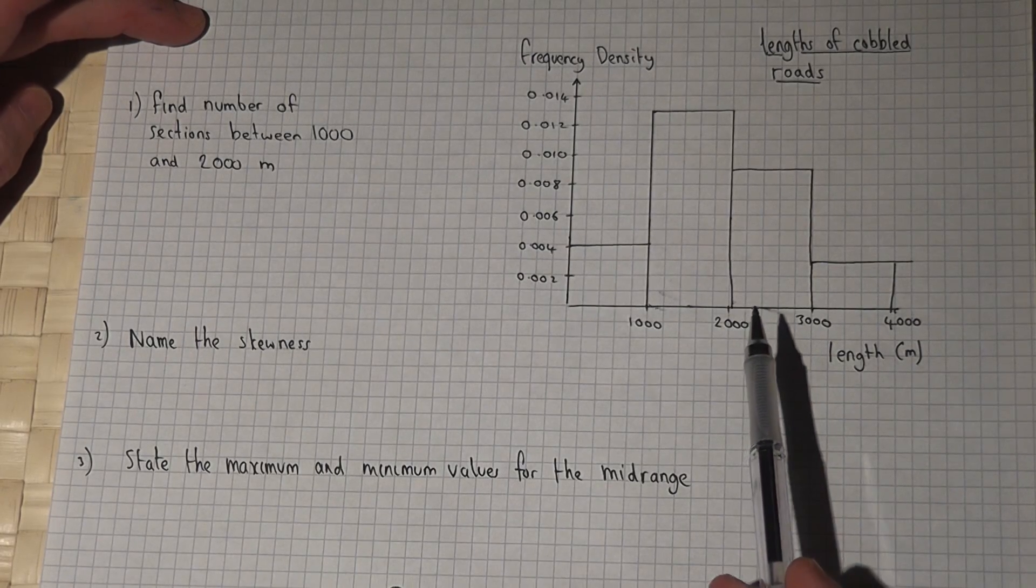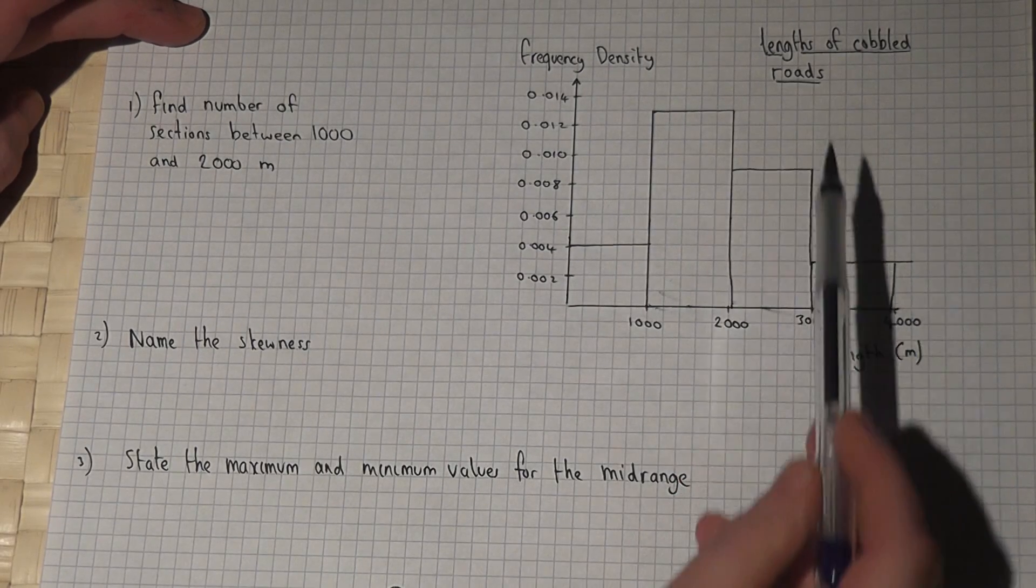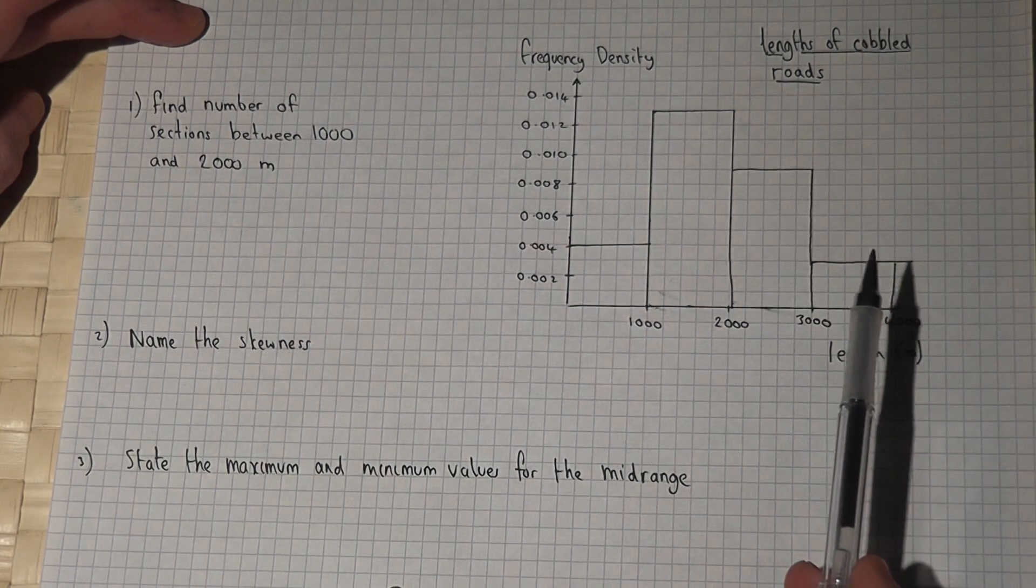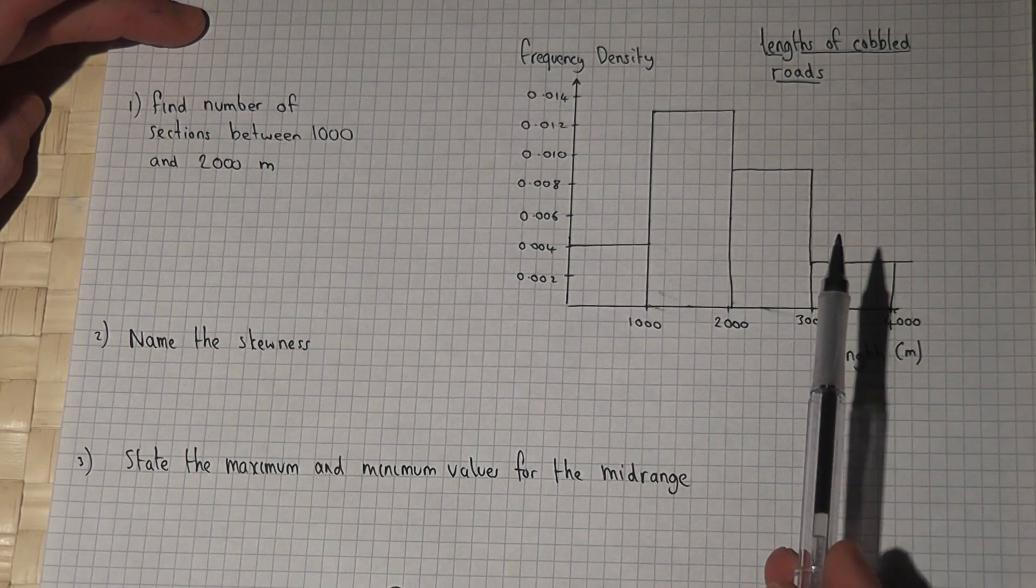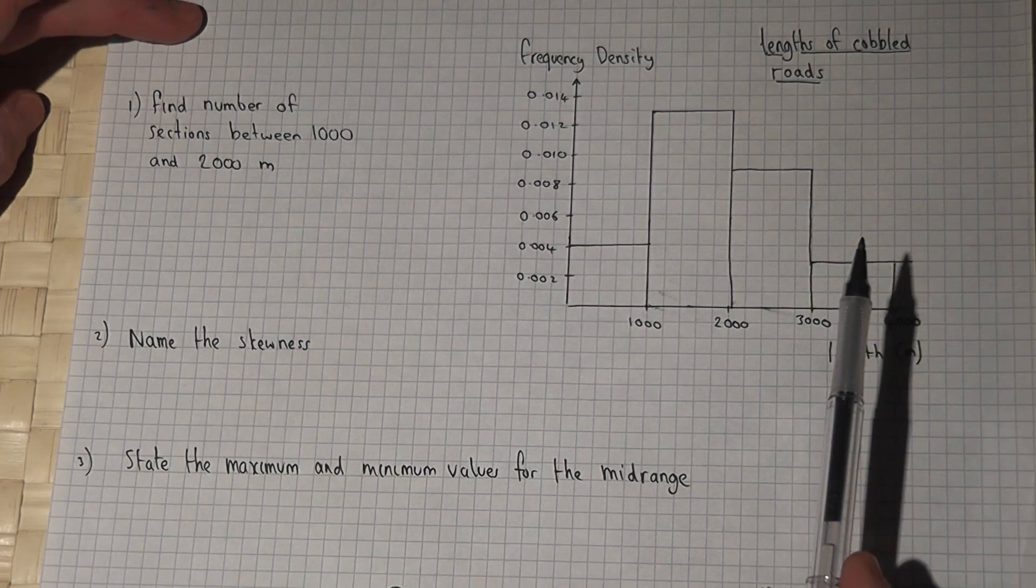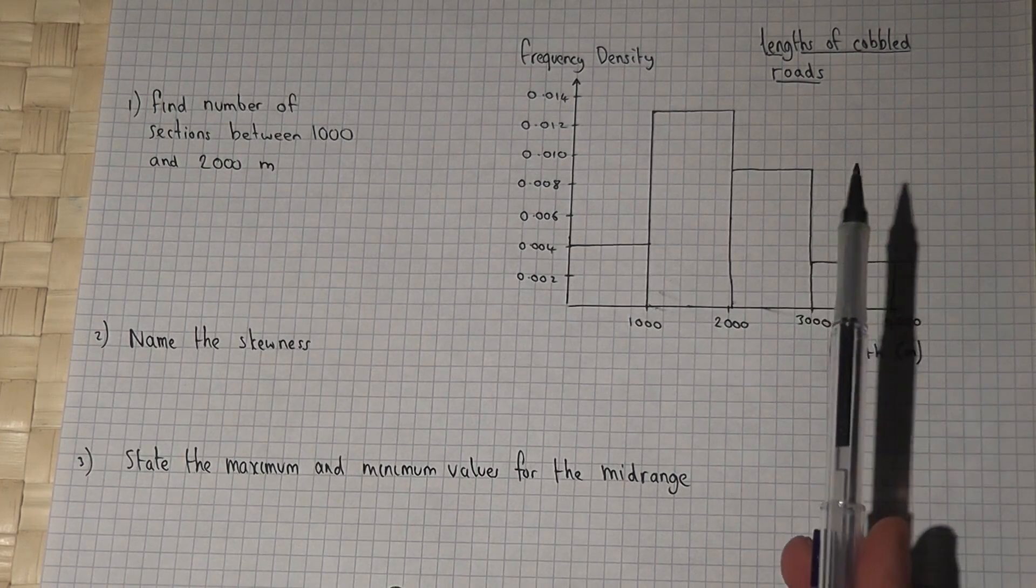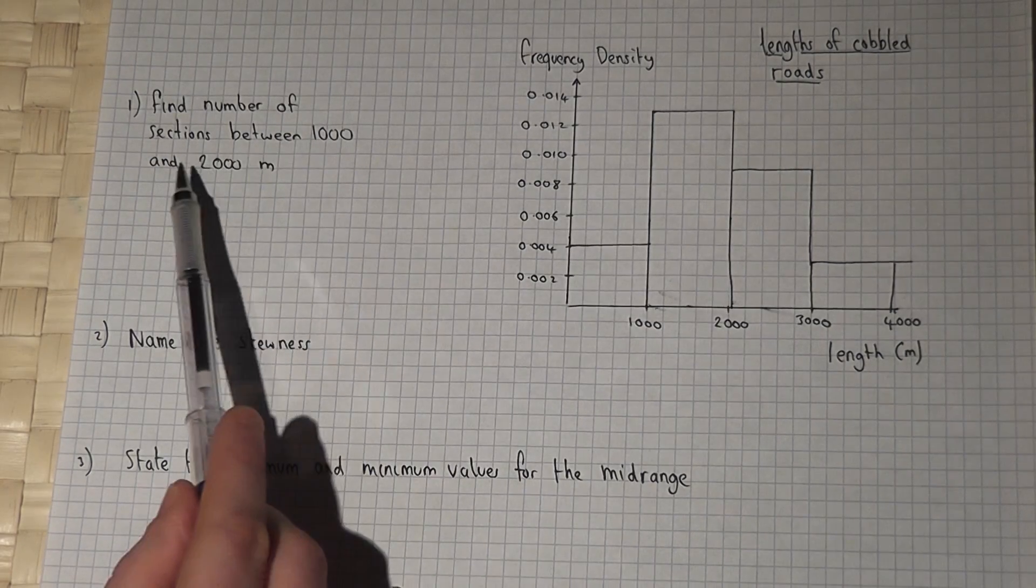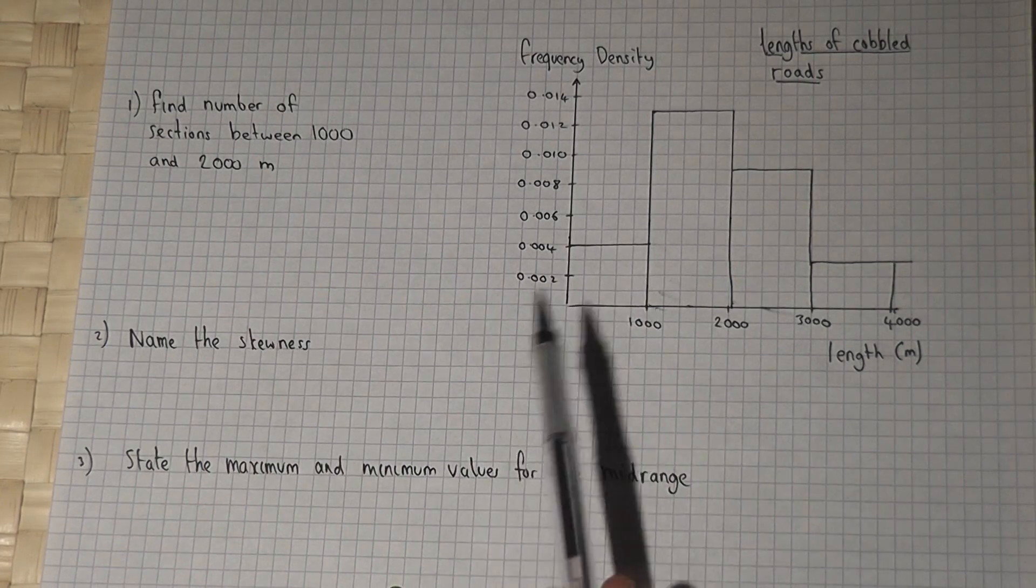This histogram represents the length of cobbled roads in France on a bike race. The question asks: find the number of sections between 1000 and 2000 meters in length.